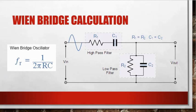Wien bridge calculations. The calculation is quite easy. It's frequency of resonance equal 1 over 2 pi RC. The condition is that R1 is equal to R2 and C1 is equal to C2.